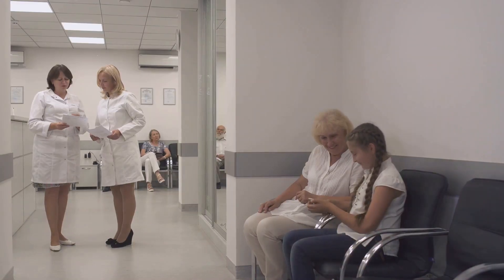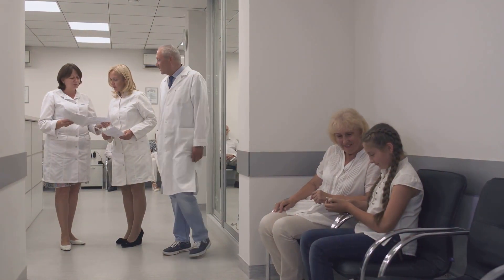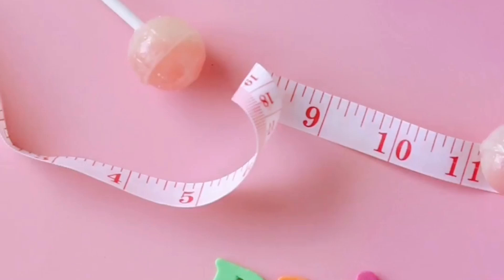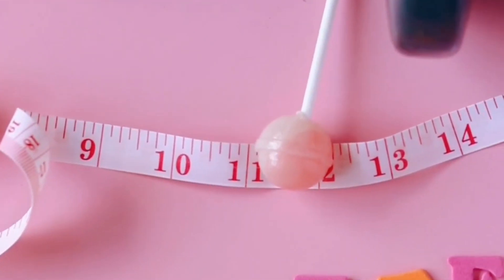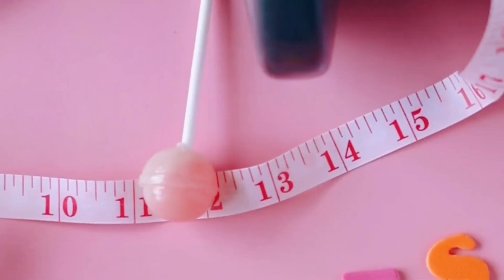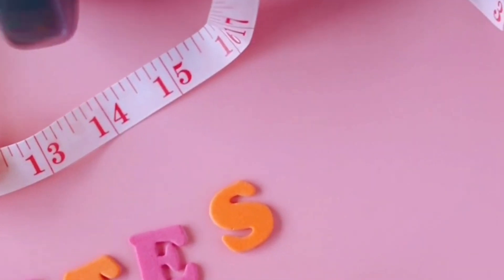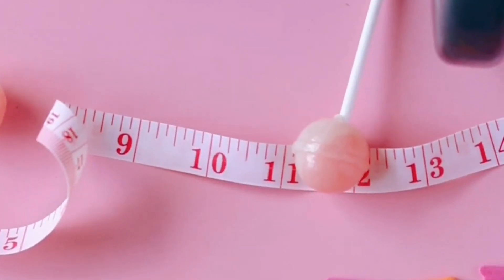However, the OGTT can be a bit time-consuming and it does require multiple blood draws, which may not be everyone's cup of tea. For example, consider Tom. After making dietary changes, his two-hour glucose level in his OGTT improved from 155 milligrams per deciliter to 120 milligrams per deciliter. This indicated an improved response to glucose, suggesting better insulin sensitivity.